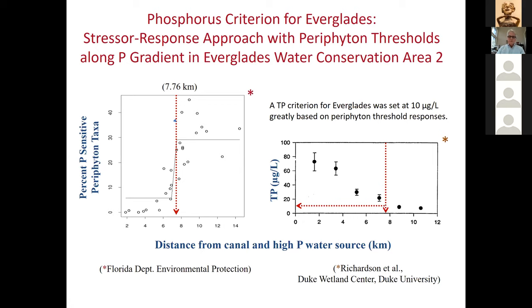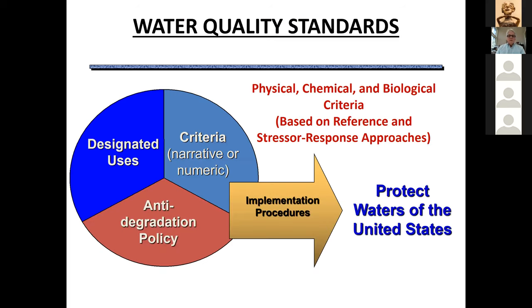These results — the loss of MAC cover and the diatom community shift, both coinciding with phosphorus around 10 µg/L — were used to establish the 10 microgram per liter phosphorus criterion for the Everglades. In this presentation I've shown how we can use diatoms to infer aquatic life biological condition and how diatom responses to nutrients can be used in water quality criteria and water quality standards. Thank you very much.